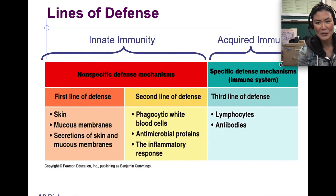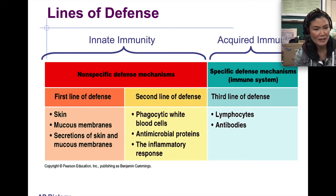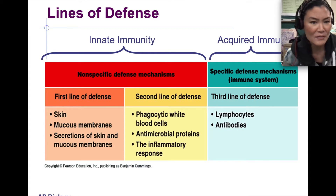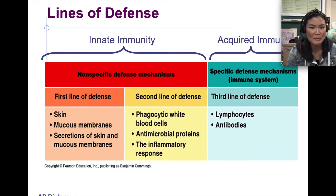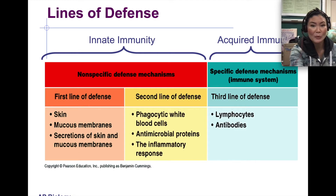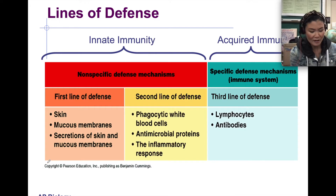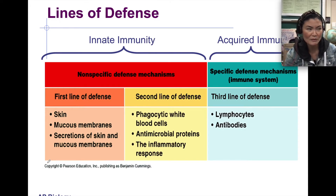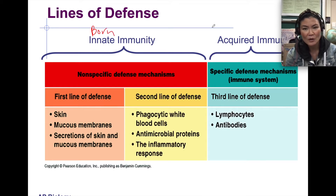The immune system has several lines of defense. The two main categories are innate immunity and acquired immunity. Innate immunity is basically the immunity you are born with — inborn immunity. Acquired immunity is the type you gain in your lifetime as you grow and encounter pathogens. Innate is what you're born with; acquired is what you gain in your lifetime.